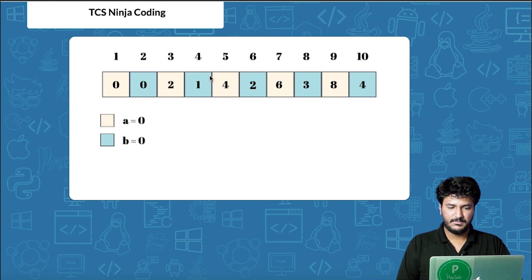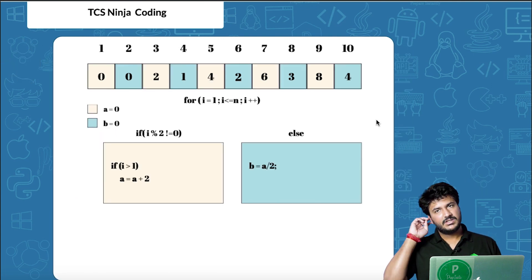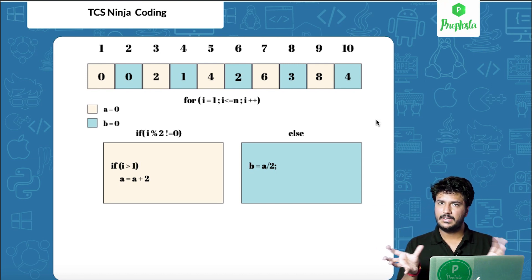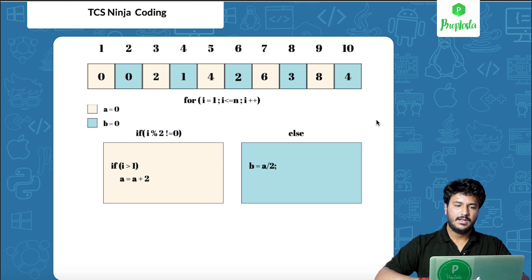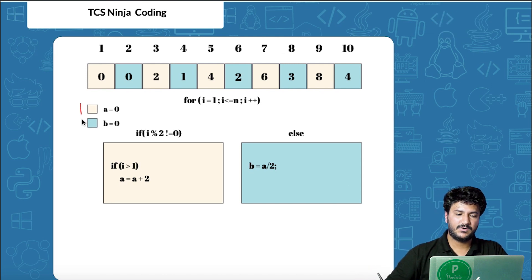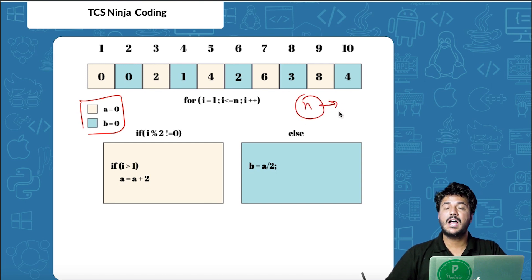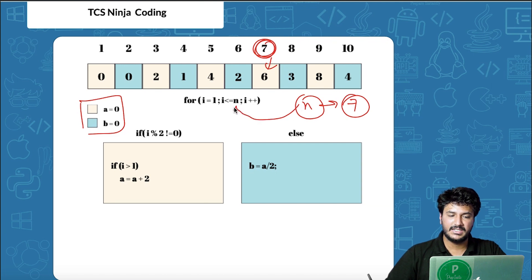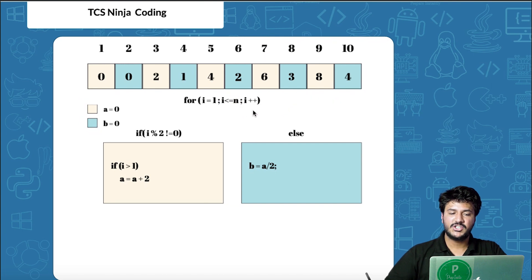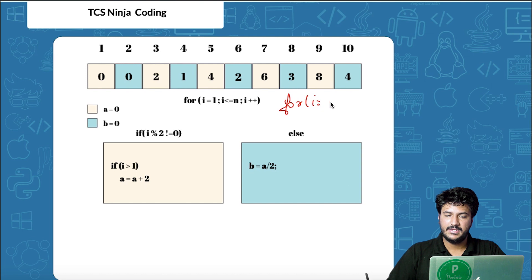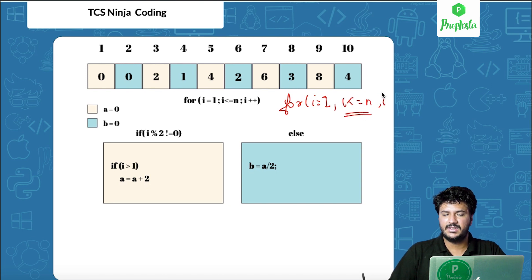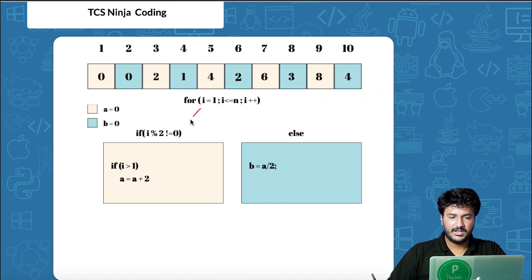Let me explain the algorithm. We initialize variables a = 0 and b = 0, and ask the user for N. If N = 7, we print the seventh value. We use a for loop from i = 1 up to i ≤ N, incrementing i each time. Inside the loop, an if-else condition handles odd and even positions: if i % 2 ≠ 0, we're at an odd position; otherwise, we go to the else branch for even positions.